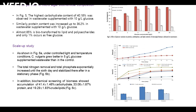In Figure 5, the variation of glucose on microalgae biochemical composition is given. The highest carbohydrate content of 40.18% was observed in wastewater supplemented with 10 g/L glucose. Similarly, protein content increased up to 36.2% in wastewater supplemented with 10 g/L glucose. Almost 85% of glucose was biotransformed to lipid and polysaccharide, and only 1% occurs as free glucose.